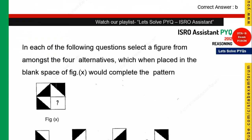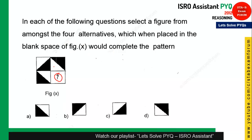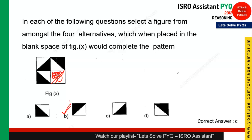The next question asks you to complete the pattern for the question mark. Looking at the pattern, the square filling should follow a specific visual arrangement. Out of the four options, option B is the right answer — note that it is B, not C.